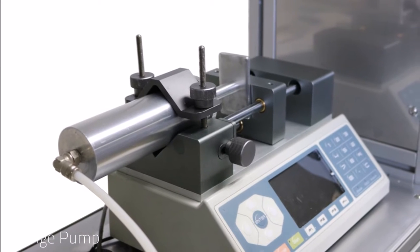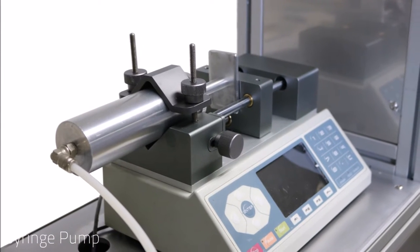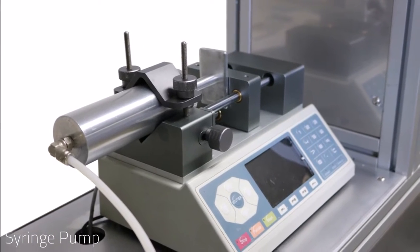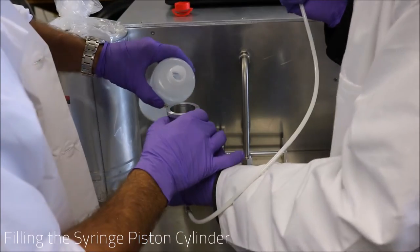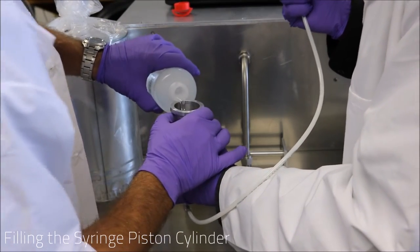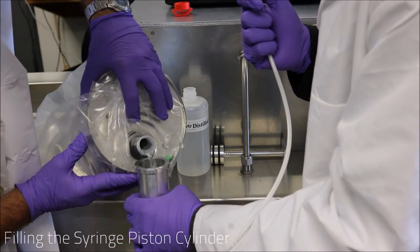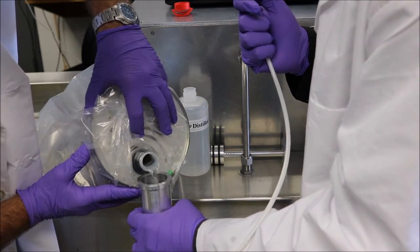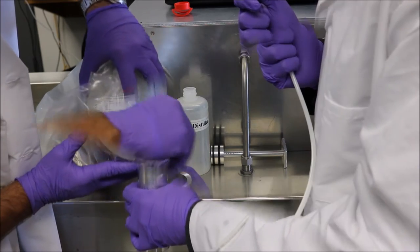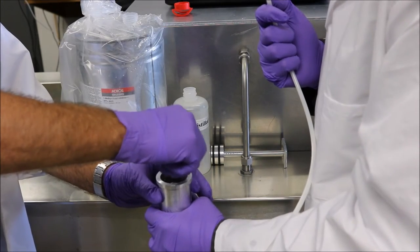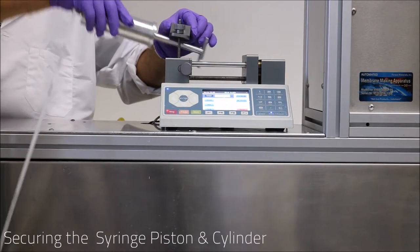The syringe pump is used to hold and pump the bore solution at a predetermined rate. Here we begin by filling the syringe piston cylinder. Fill the cylinder halfway with distilled water and the rest with your solvent. Make sure that the solution is mixed well before the next step. This ratio can change based on the composition of your bore solution.